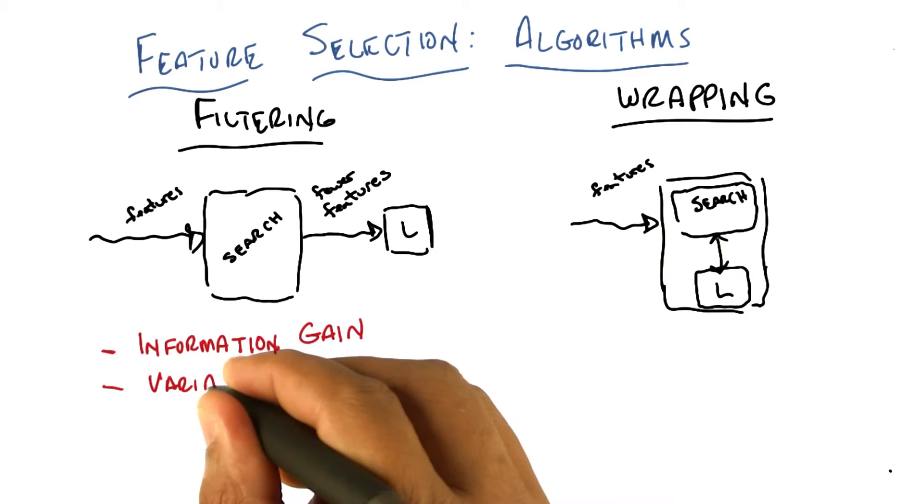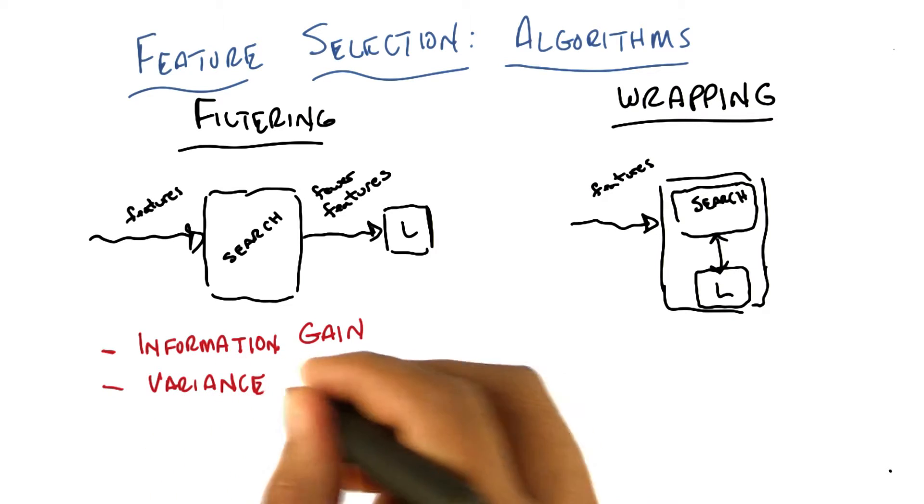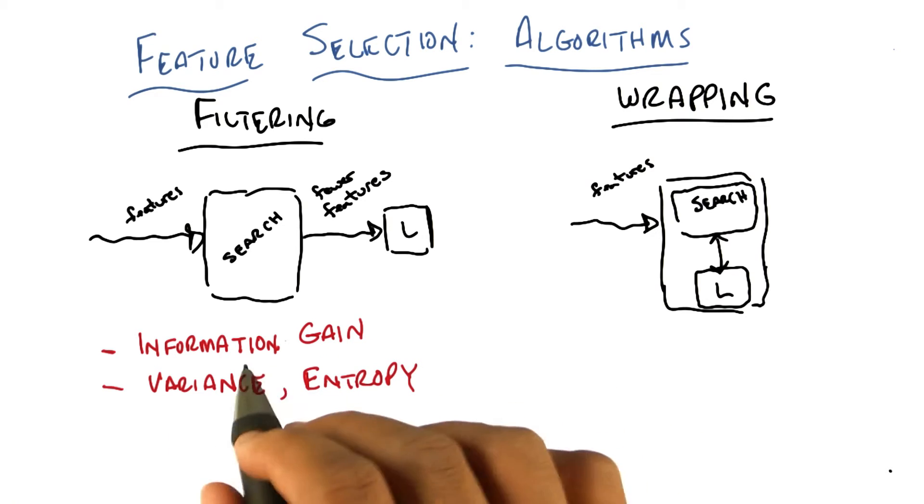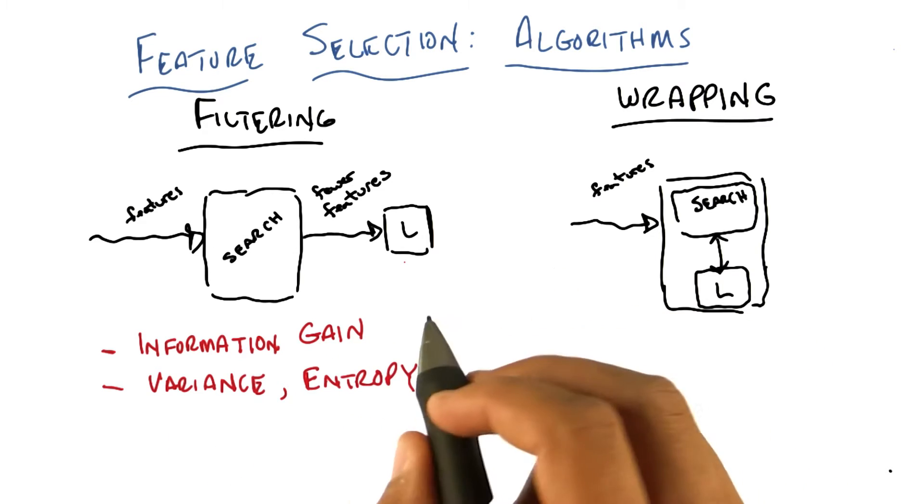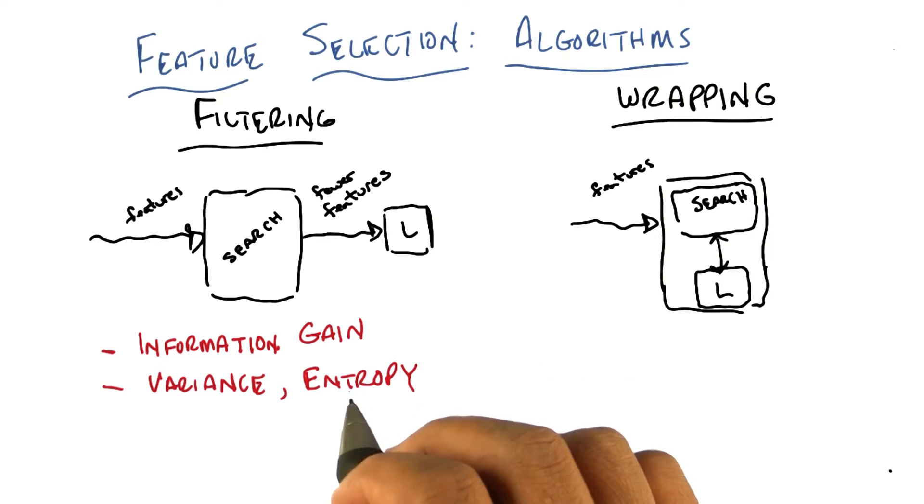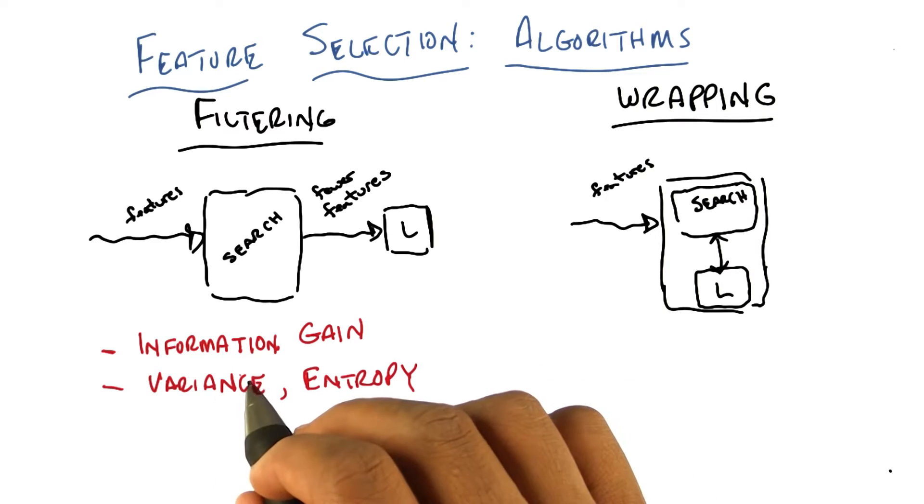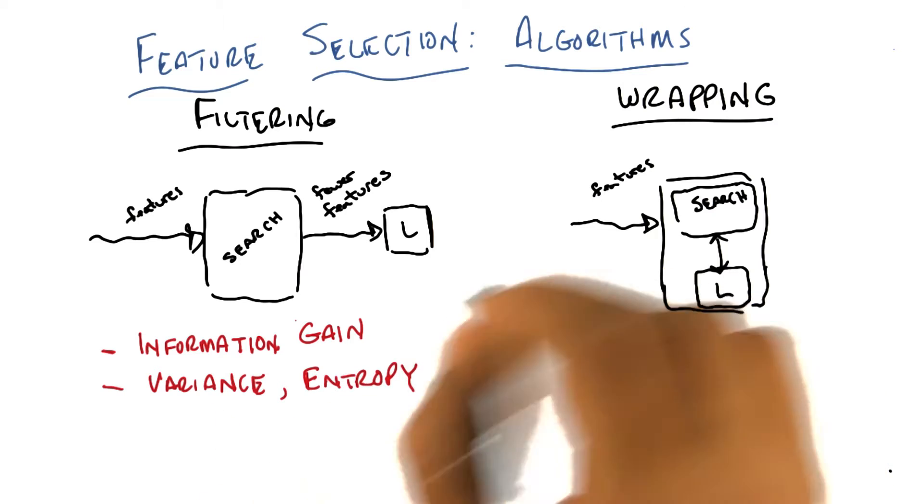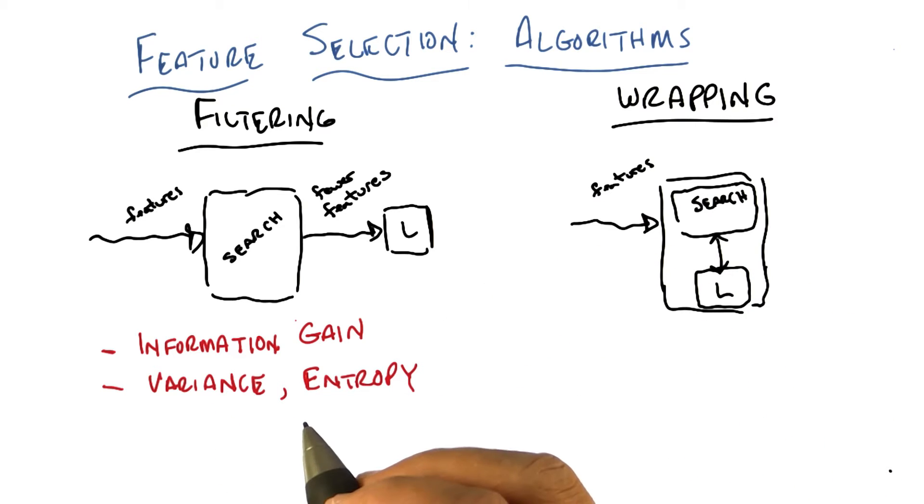So we might call that variance, or actually another version of that would be entropy. And there's tons of ways to do this. There's something called the genie index, which is a kind of version of entropy. There's variance you're telling me here that you're trying to pick features that show up a lot. Anything else?